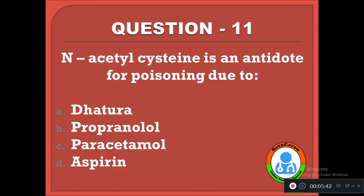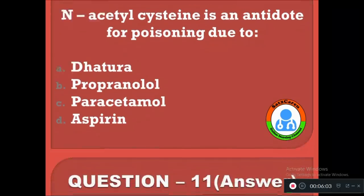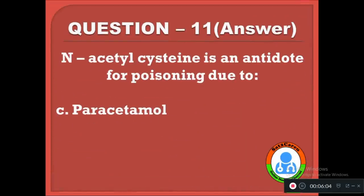Question 11: N-acetylcysteine is an antidote for poisoning due to — option A: datura, B: propranolol, C: paracetamol, D: aspirin. The correct answer is C, N-acetylcysteine is an antidote for poisoning due to acetaminophen, i.e., paracetamol.